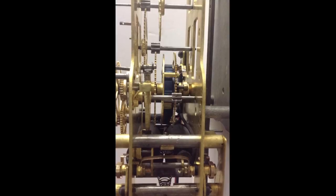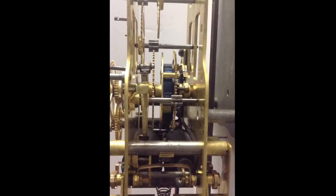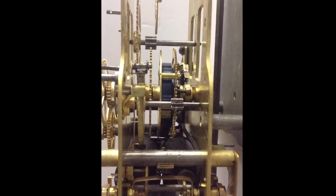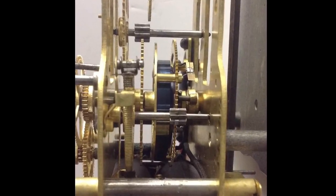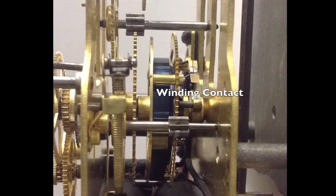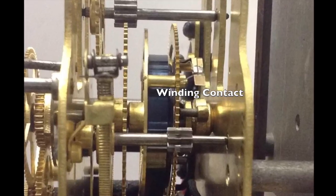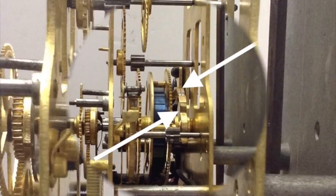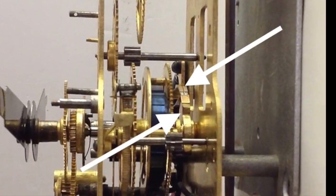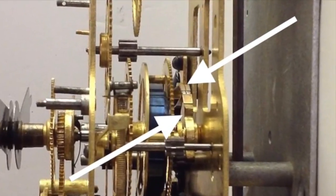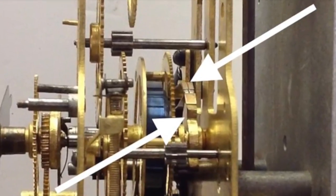An image from the side reveals that the mainspring and a cam that closes the electrical contact are mounted on the center shaft. The electrical contact that energizes the winding motor is mounted on the backplate above the center shaft. The arrow on the left is pointing to the cam and the arrow on the right is pointing to the winding contact.